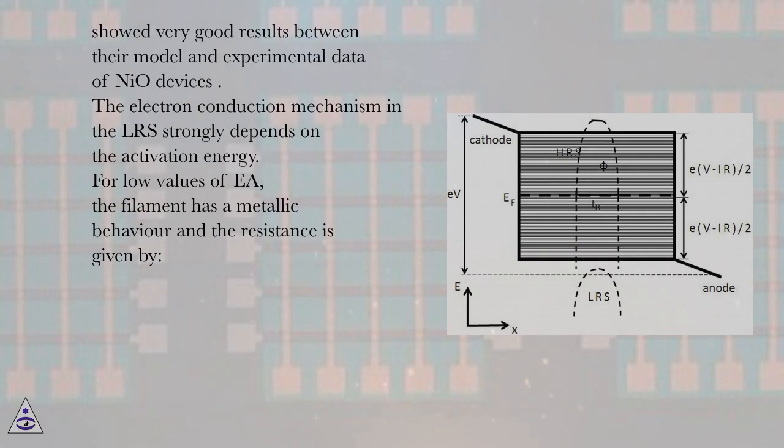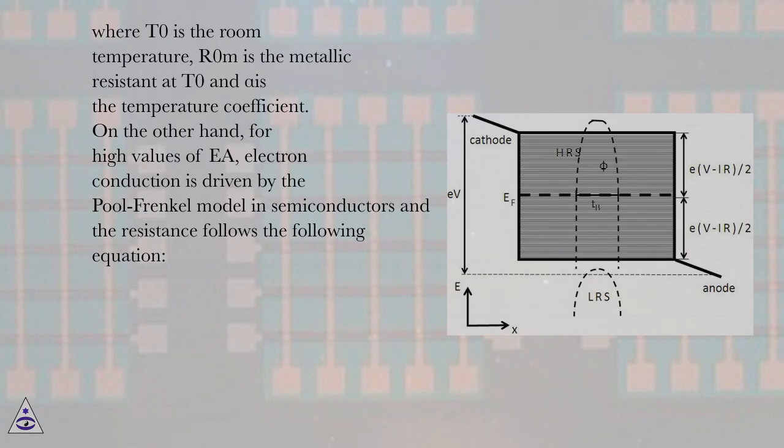The electron conduction mechanism in the LRS strongly depends on the activation energy. For low values of EA, the filament has a metallic behavior and the resistance is given by, where T0 is the room temperature, R0m is the metallic resistance at T0 and alpha is the temperature coefficient. On the other hand, for high values of EA, electron conduction is driven by the Poults-Frankel model in semiconductors and the resistance follows the following equation.